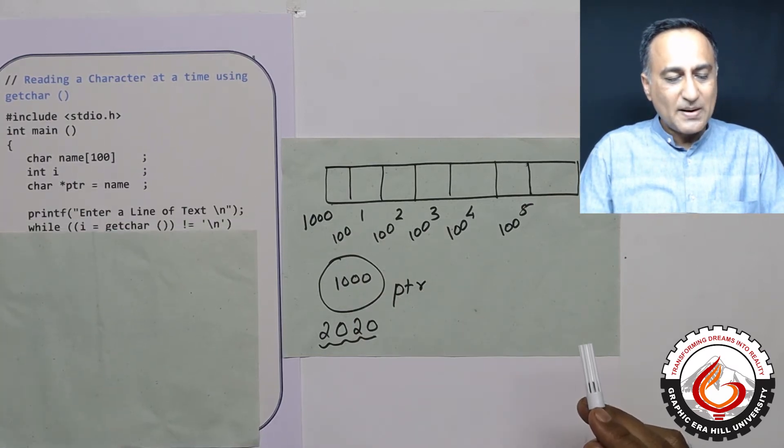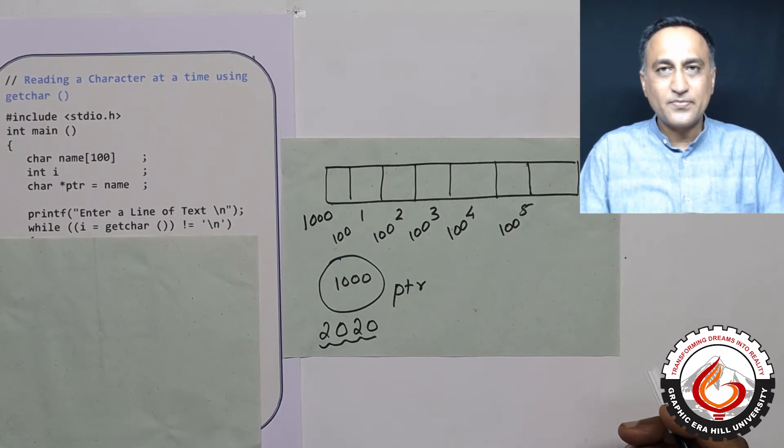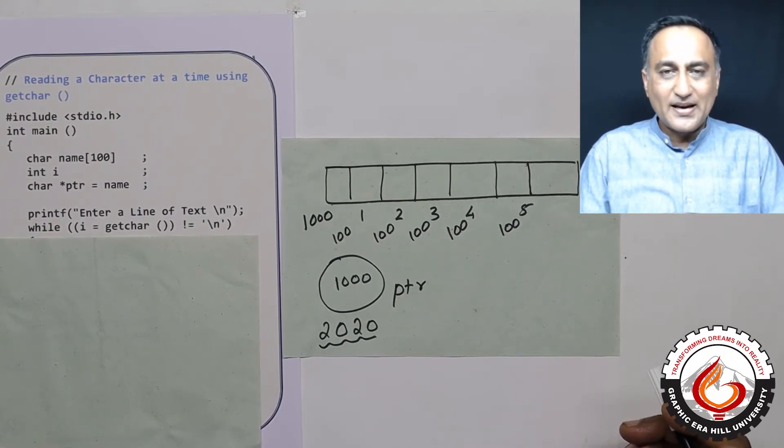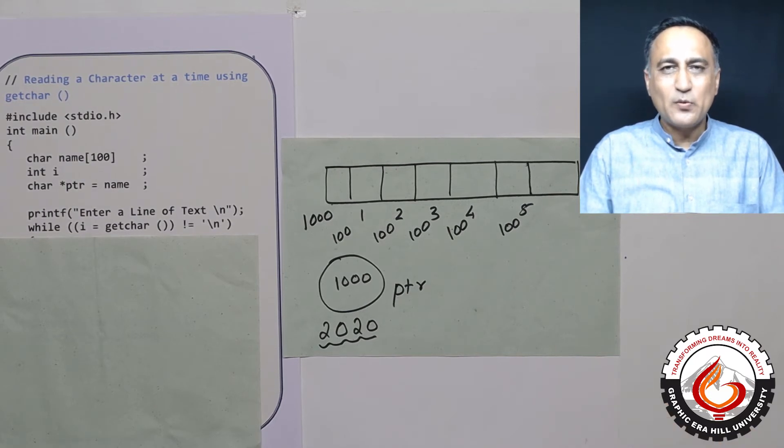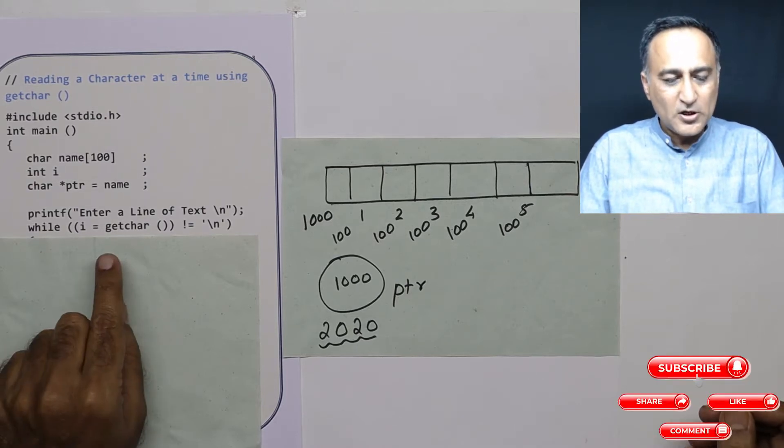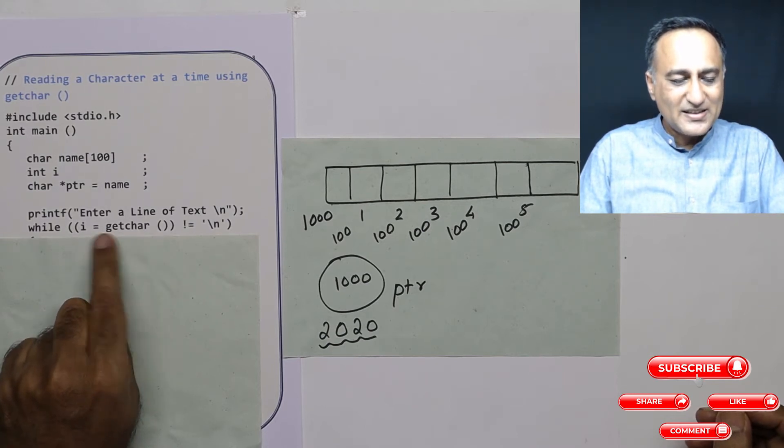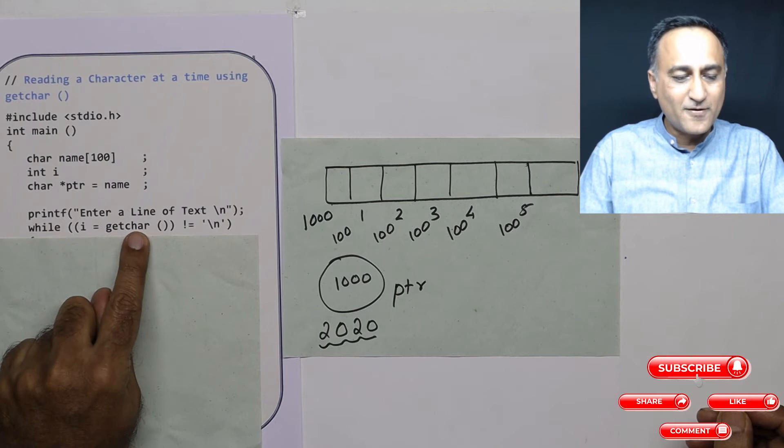Now I am asking the user to enter a line of text. Let's say we take a simple example—I'm going to enter ABC. That's enough to understand this concept. Since I put this in brackets, this is the innermost bracket and this particular part is going to get executed first.